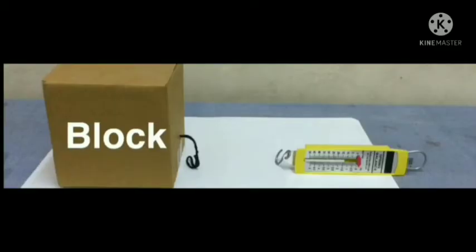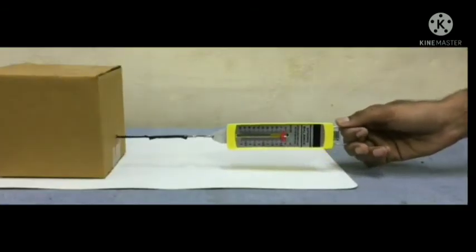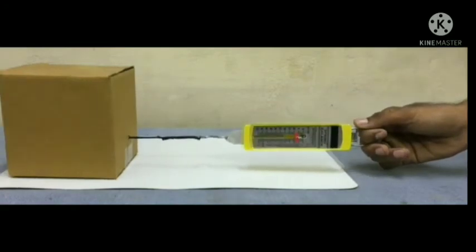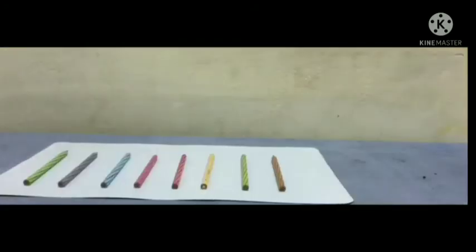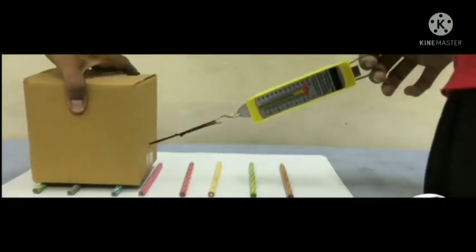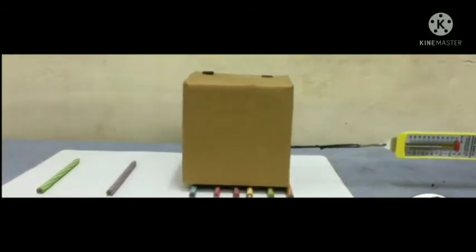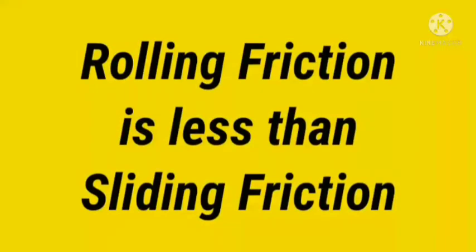For this activity, take a wooden block. Attach a hook of the spring balance to it and gently pull the spring balance in the horizontal direction. Note the reading of the spring balance. Now repeat the same by placing three to four pencils parallel to one another under the wooden block, acting as rollers. Note the reading of the spring balance again — it shows less force. As noted, rolling friction is less than sliding friction.